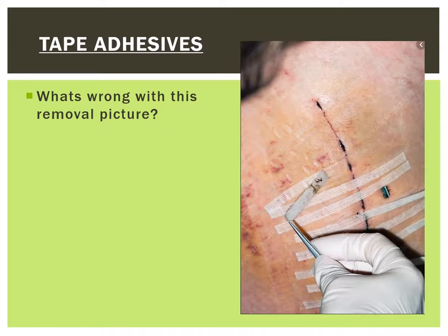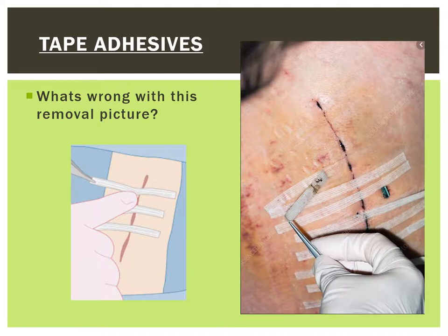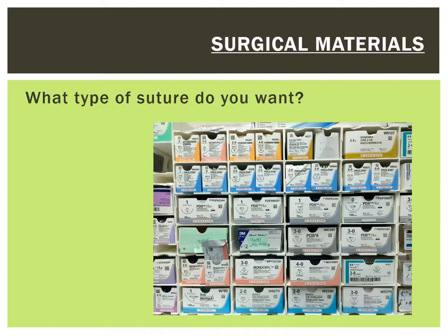Removal of skin steristrips should be done in a specific manner. Always remove the suture strips from the edges towards the wound center, lifting one side then the other. As you can see here in this picture, this physician is removing a steristrip in an incorrect fashion.